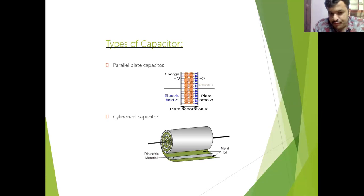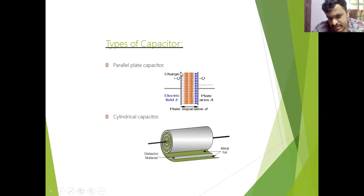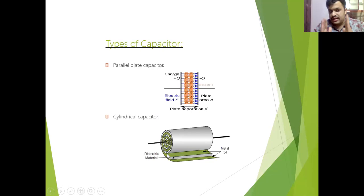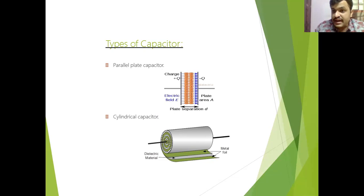There are mainly two different types of capacitors. The first is a parallel plate capacitor — here are two conductors and in between these two conductors there is some non-conductive material, with a separation between two plates represented by D. Another type is a cylindrical capacitor — it is not parallel but cylindrical in shape. The principle is the same: two conductors with a non-conductive material between them.